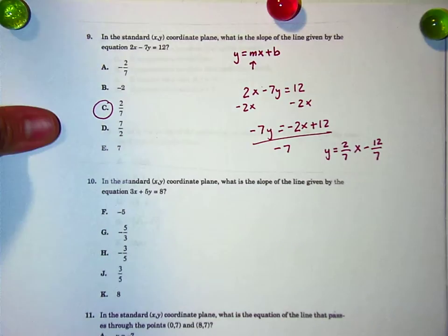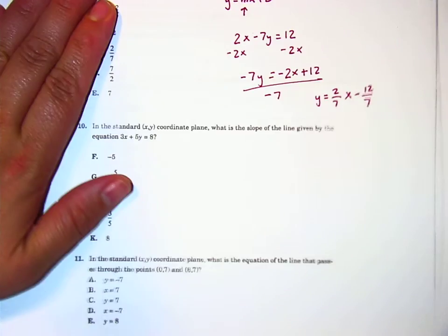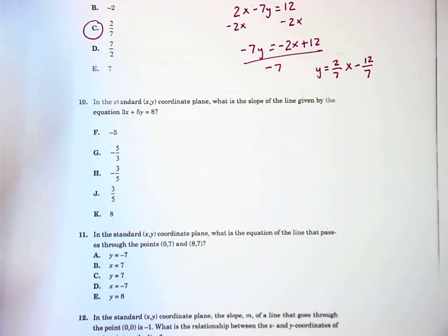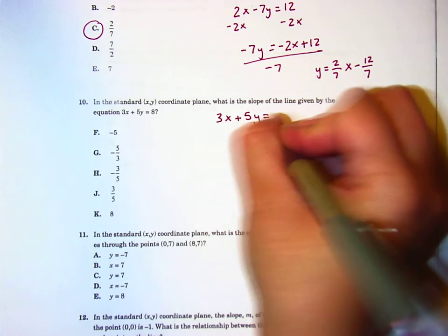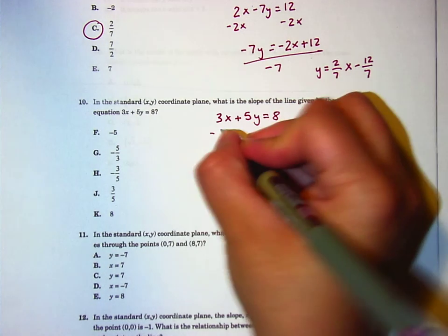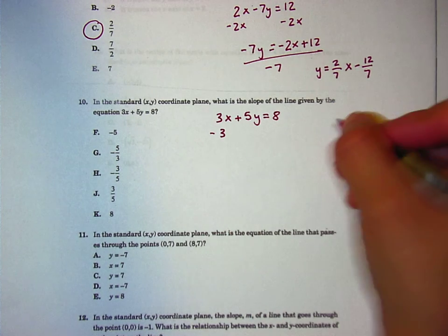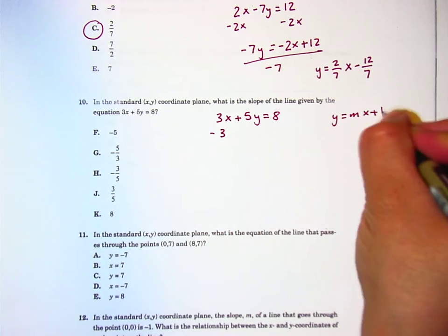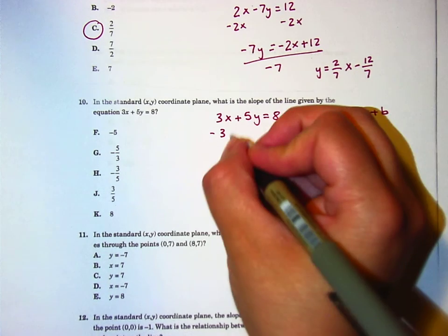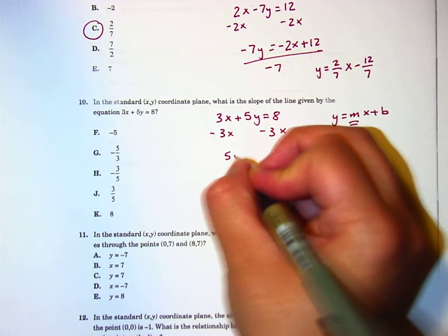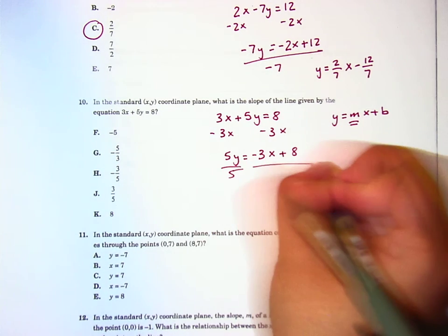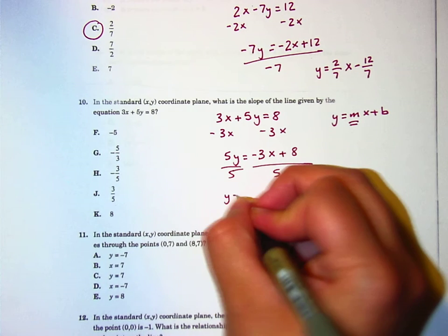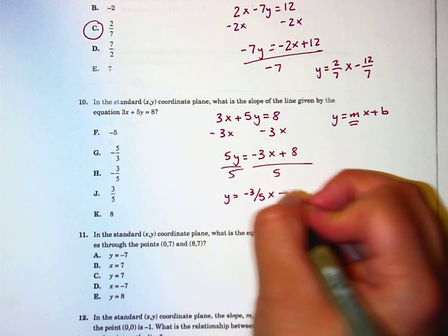Alright, number 10. What is the slope of the line given by this equation? My goodness, these are, these ones are a little repetitive on this one. But, apparently, this question gets asked a lot. So, hopefully, you're doing pretty well on this by now. At least understand it. So, we're trying to, again, y equals mx plus b. Trying to figure out m right there. So, I'm gonna subtract 3x on both sides. I get 5y equals negative 3x plus 8. And then, divide by 5 all over. So, y equals negative 3 fifths x plus 8 fifths.